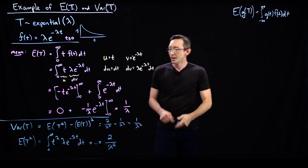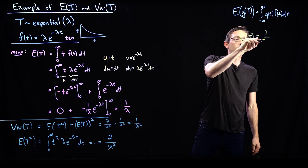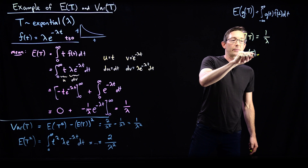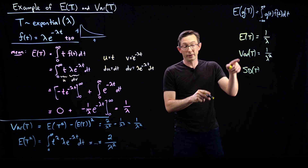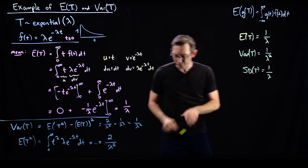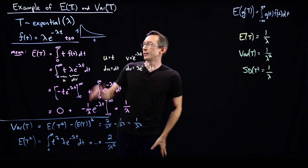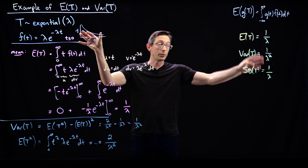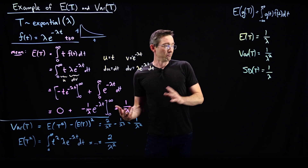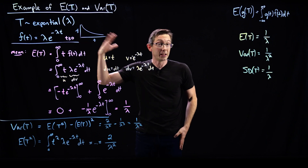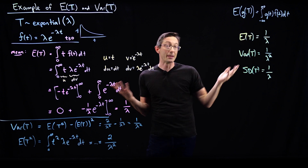So the expectation of t equals one over lambda, the variance of t equals one over lambda squared, and that means the standard deviation of t is the square root of that, which equals one over lambda. That's pretty interesting — the standard deviation is equal to the mean. I want you to think about whether that makes sense, whether it's expected, and whether it's partly related to the memoryless effect of this distribution.